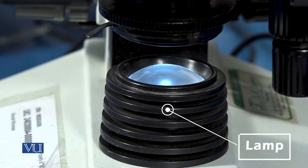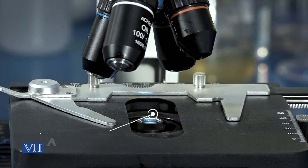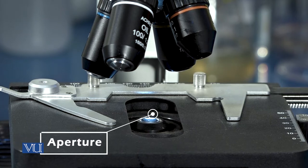Lamp or illuminator is used as a light source. The light passes through the small opening called aperture.